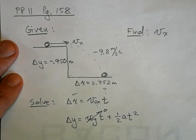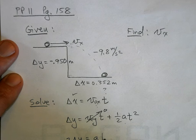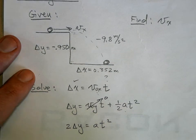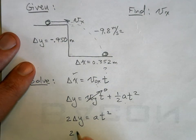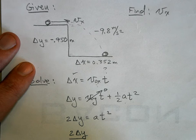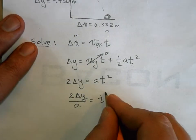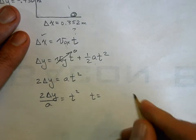Multiply both sides by 2, so I get 2Δy is equal to at squared. Then divide by a, and when I do, I get 2Δy over a is equal to t squared. And then I just take the square root of both sides, and I get t is equal to the square root of 2Δy over a.